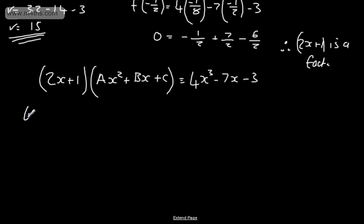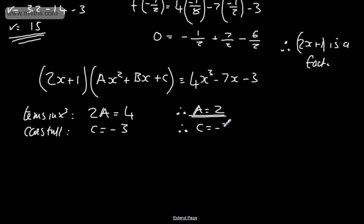So we've got terms in x cubed. If we look at terms in x cubed, on the left-hand side, I'm going to have 2a x cubed. On the right-hand side, I've got 4x cubed. 2a equals 4, therefore a equals 4 over 2, which is 2. Let's now consider the constant. On the left-hand side, we've got 1 times c, and that must equal the constant on the right, therefore c equals minus 3.